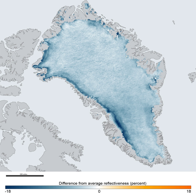Large outlet glaciers, which are restricted tongues of the ice sheet, move through bordering valleys around the periphery of Greenland to calve off into the ocean, producing the numerous icebergs that sometimes occur in North Atlantic shipping lanes. The best known of these outlet glaciers is Jakobshavn Glacier, which, at its terminus, flows at speeds of 20 to 22 metres or 66 to 72 feet per day.